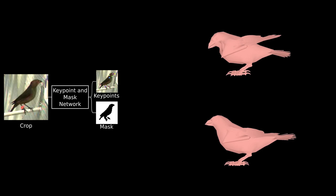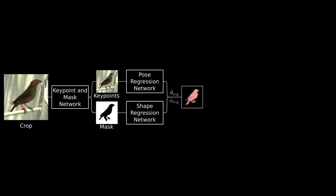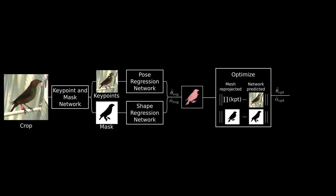We then train pose and shape regression networks on a synthetic dataset of posed meshes and corresponding reprojected keypoints and silhouettes. These networks allow us to predict the parameters of an avian articulated mesh model, which provides a good initial estimate for further optimization.